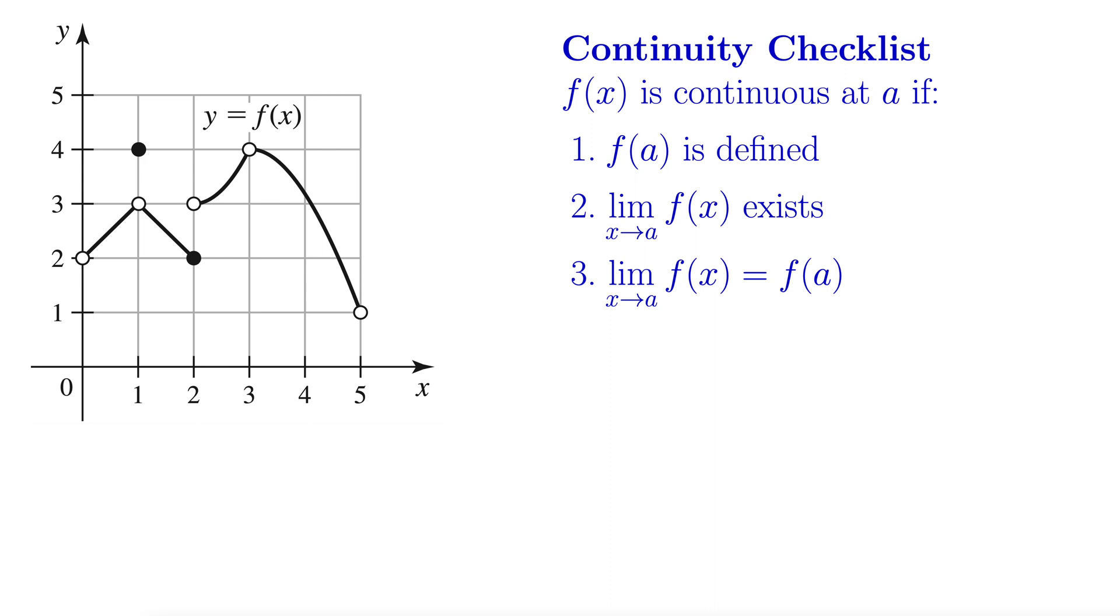So here's an example of a function with all kinds of discontinuities. You can see it's pretty choppy. Clearly we couldn't draw this without picking up our pencil. And what we want to do in this exercise is list all the discontinuities and then say why it's a discontinuity.